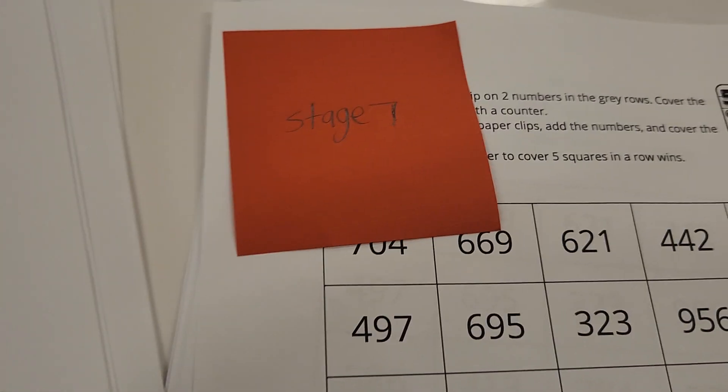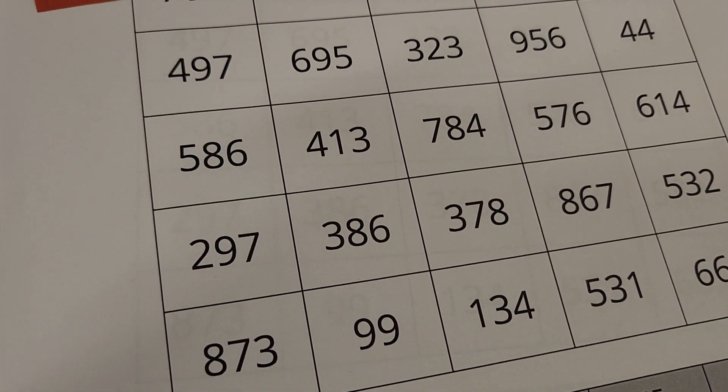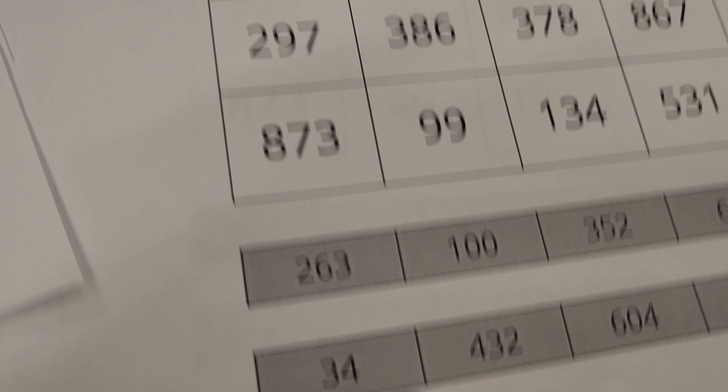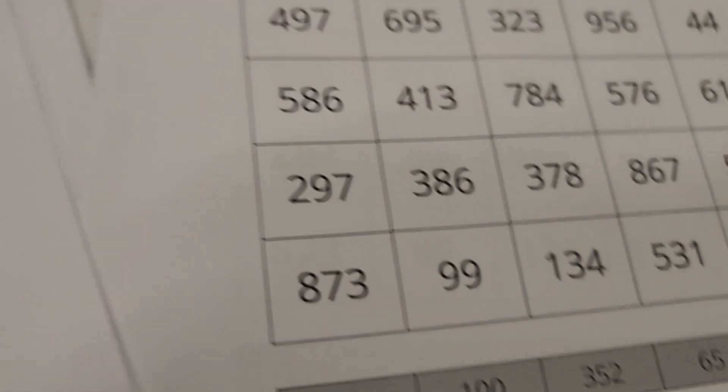Stage seven, what do you notice children? That there are three and two digits. We have three digits here and the addends are what? Three digits and two digits. Good.